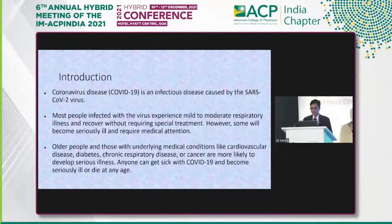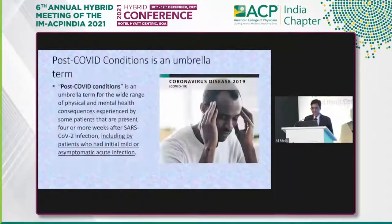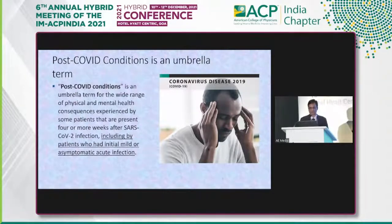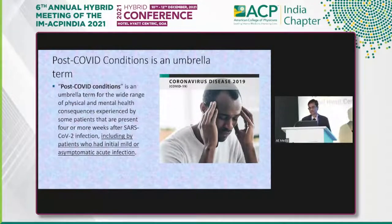We are all familiar with SARS-CoV-2. Most patients have mild and moderate illness, but some do get seriously ill and require medical attention, most often those with comorbid conditions. But what is post-COVID condition? It is an umbrella term for the wide range of physical and mental health consequences experienced by some patients, present four or more weeks after SARS-CoV-2 infection. Importantly, it includes patients who initially had mild or even asymptomatic infection — they too may present with post-COVID symptoms.